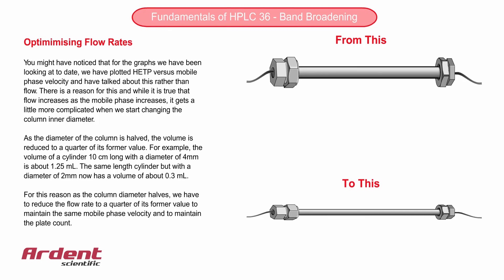You might have noticed that for the graphs we have been looking at to date, we have plotted HETP value versus mobile phase velocity and have talked about this rather than flow. There is a reason for this, and while it is true that as the flow increases, the mobile phase velocity also increases, it gets a little bit more complicated when we start changing the column inner diameter.